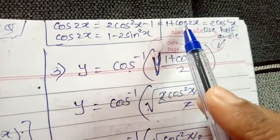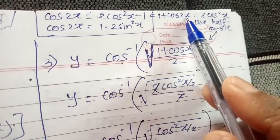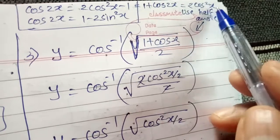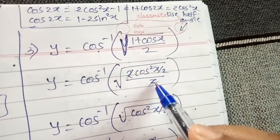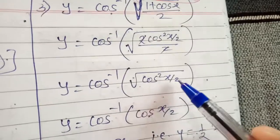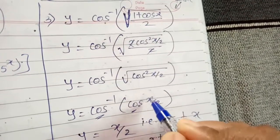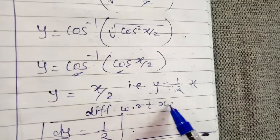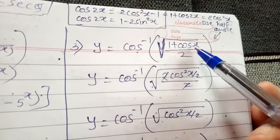Since we have 1 + cos x (not cos 2x), we apply the half-angle formula substituting x/2, giving 1 + cos x = 2cos²(x/2). Replacing this inside the expression: under the root we get 2cos²(x/2), the 2s cancel, leaving cos²(x/2). Removing the root gives cos(x/2). Outside is cos inverse and inside is cos, so they cancel and the answer is x/2. Differentiating, dy/dx equals 1/2.